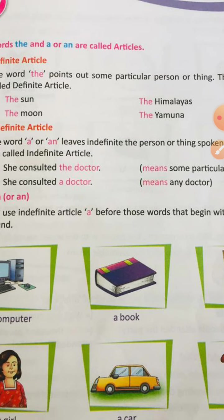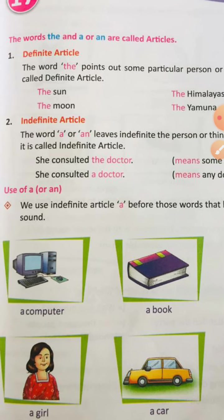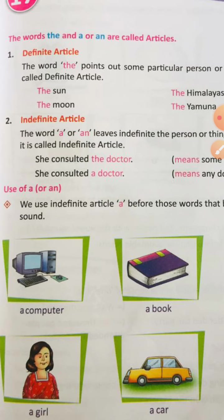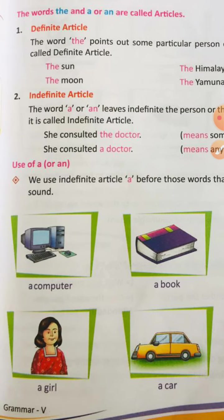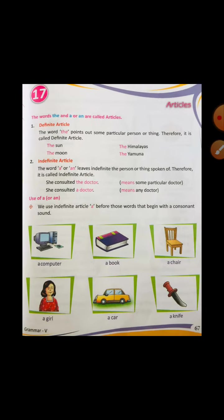If we say 'she consulted a doctor', it means any doctor — we are not aware about which doctor. When we know the name of the doctor, we use 'the doctor', and when we do not know from which doctor she consulted, we use 'a doctor'. So examples of indefinite article: a computer, a girl, a car, a knife.